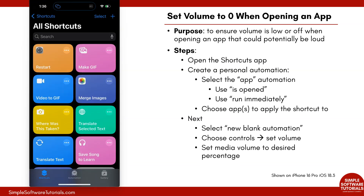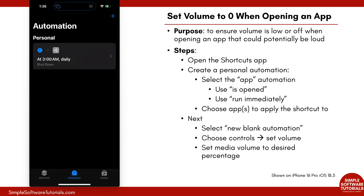When you open the app you'll probably end up on the Shortcuts tab. What we want to do is tap on Automation down there in the bottom center, and here we can create a personal automation.